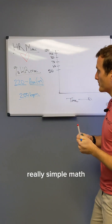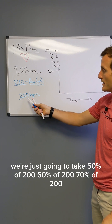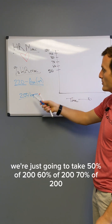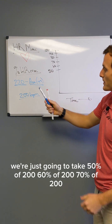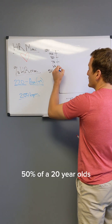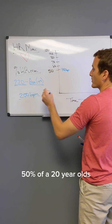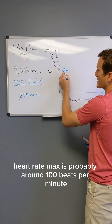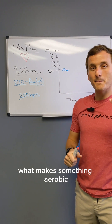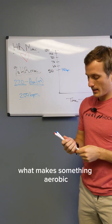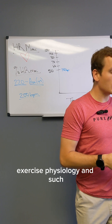Getting percentages of your heart rate max is really simple math — you just take 50%, 60%, 70% of your max. So 50% of a 20-year-old's heart rate max is around 100 beats per minute. Now, what makes something aerobic? Without getting too deep into exercise physiology, you've got different energy systems.